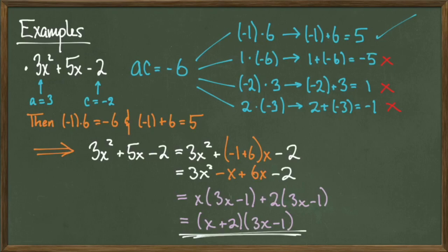And then once we factor by grouping, we get a final factorization of x plus 2 times 3x minus 1.